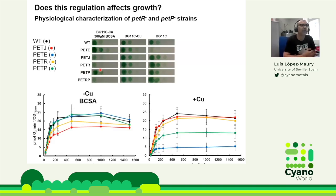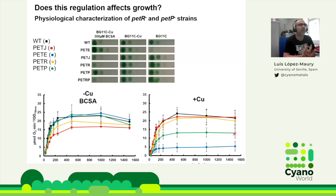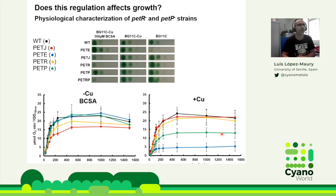We analyzed photosynthetic performance using oxygen evolution. The PETJ mutants are affected without copper, and the PETR mutants are a bit less affected but still show a clear difference. In the presence of copper, the PETE mutant lacking plastocyanin is clearly affected. To our surprise, the PETP mutant, which showed no phenotype in growth, was really affected in oxygen evolution — suggesting something else is changing in this mutant, which we want to pursue in the future.